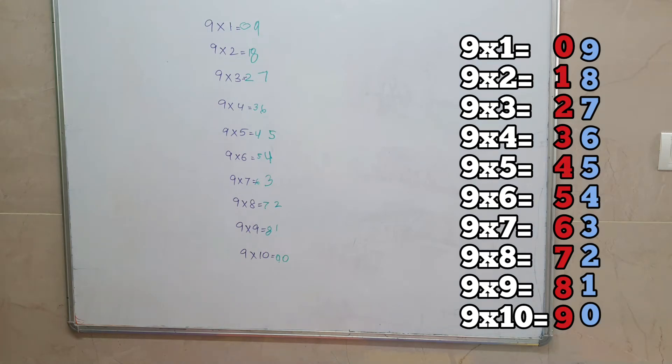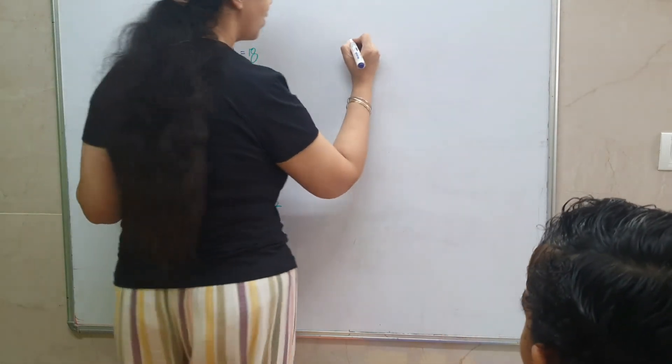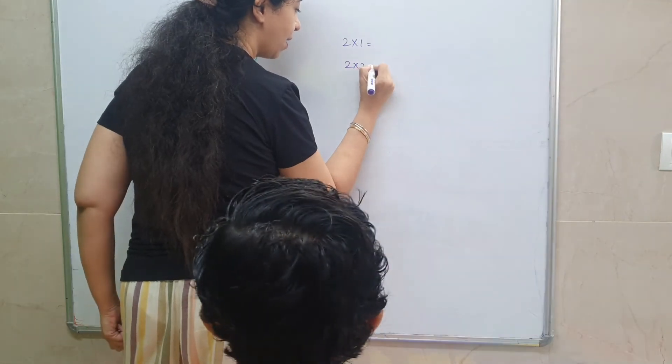Now what will you solve next? What are we gonna do next? Two, two tables, table of two. Yes, okay, so mama will write down the table and you write the answers.